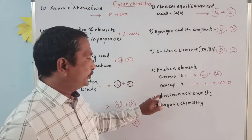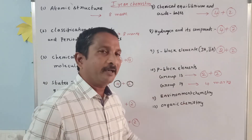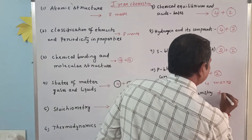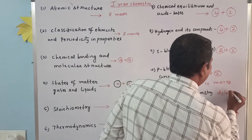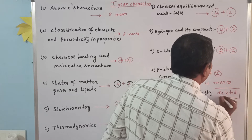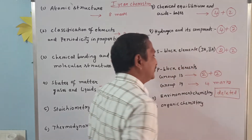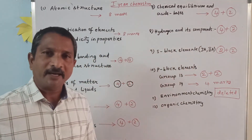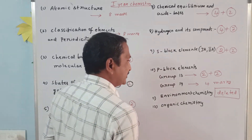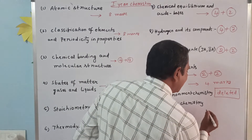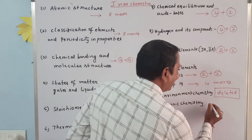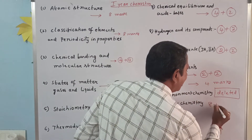Eleventh unit: environmental chemistry — that was completely deleted. No questions from environmental chemistry. Organic chemistry has a weightage of ten marks, that is eight plus two.